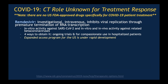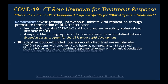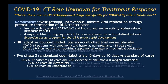The FDA does not have any current approvals for the use of drugs in COVID-19, so these are considered off-label or investigational uses. We've heard a lot about remdesivir, which is investigational, intravenous, and inhibits viral replication. It has known in vitro activity against SARS-CoV-2 and against other beta coronaviruses. There are four ways to get it: through ongoing trials, compassionate use in hospitalized patients, an expanded access program in the U.S. under rapid development, and several national trials — including a double-blind placebo-controlled trial for COVID-19 patients with pneumonia and hypoxia, as well as two phase three randomized open-label trials for adults.